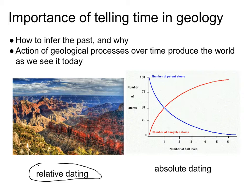Relative dating is basically determining what's younger and what's older. That view on the left-hand side is the Grand Canyon. When you look at that picture, you see a canyon, but what else? You see sea layers — distinct coloration.